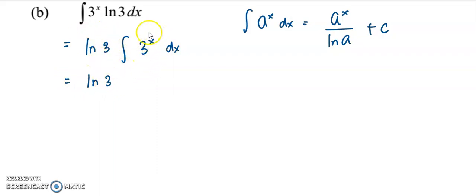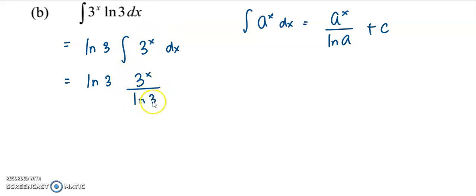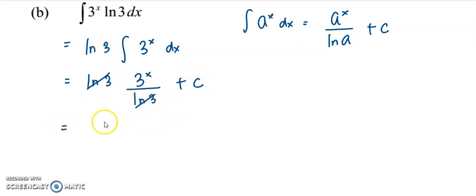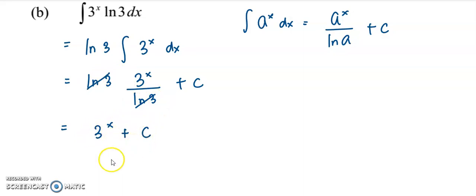Now applying this formula: log 3, I just copy it down. Integrate 3 to the power of x — I get 3 to the power of x divided by log 3 plus constant C. After simplifying, we have 3 to the power of x plus C.